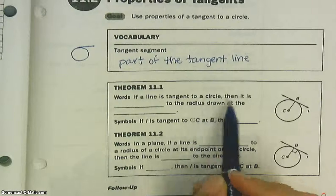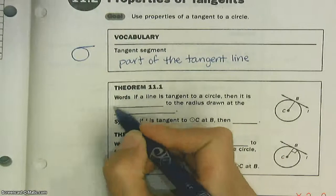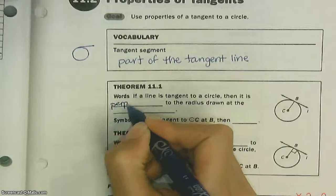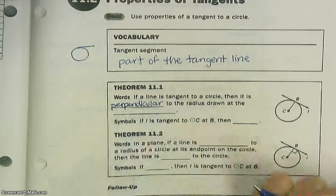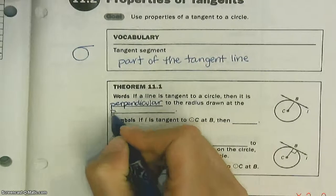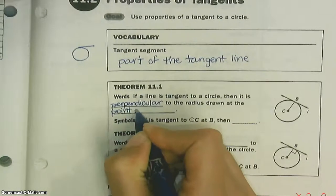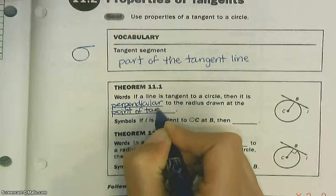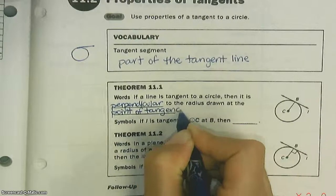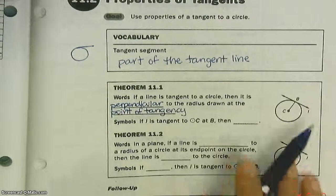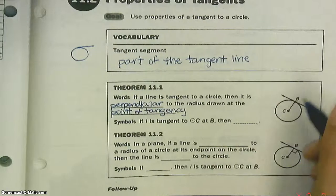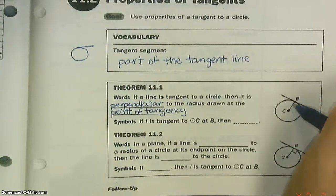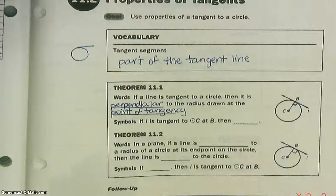Theorem 11.1: If a line is tangent to a circle, then it is perpendicular to the radius drawn at the point of tangency. Here's our tangent line, and here's our point of tangency. If we were to draw the radius, this should be a right angle.